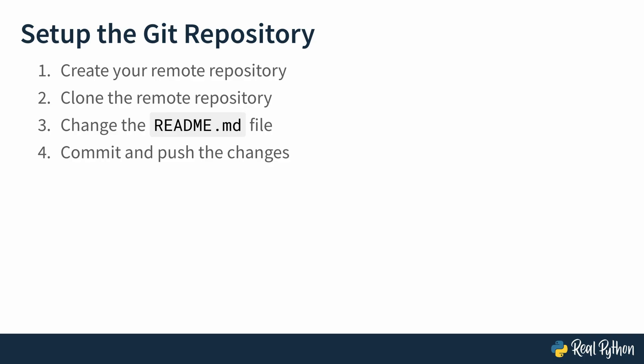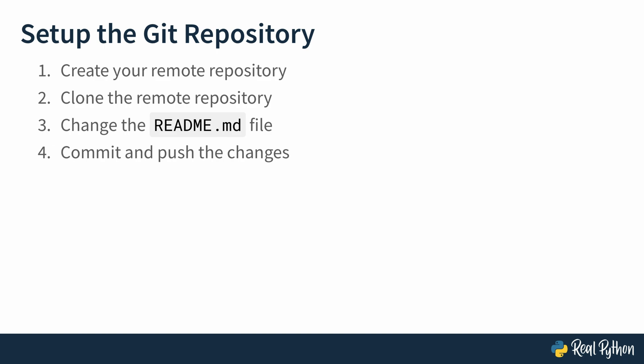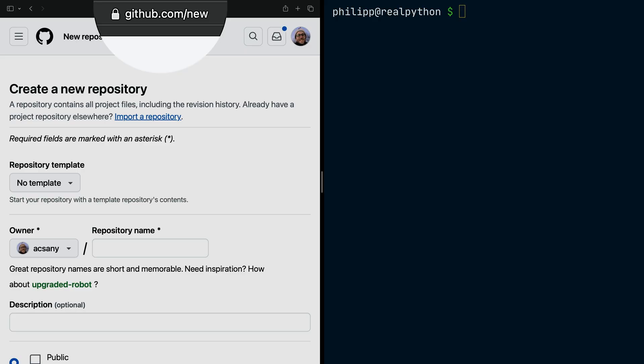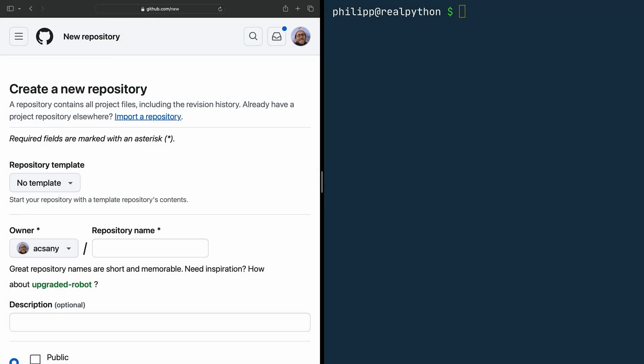In this lesson, you will set everything up and check if it works. You will create your remote repository first, then clone the remote repository, change the readme markdown file locally, and then commit and push the changes to see if everything works. To get started, you need your browser and the terminal. On the left side you can see my browser where I'm already at github.com/new, which is a shortcut to create a new repository. And on the right side you see my terminal, where I will clone the remote repository in a moment.